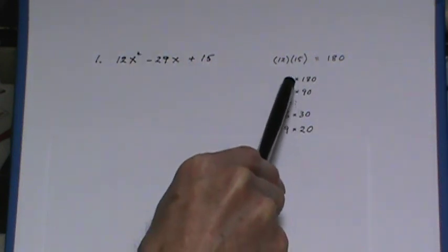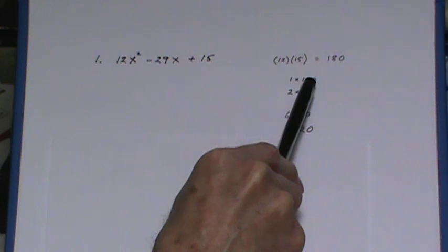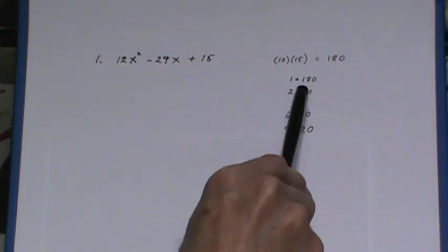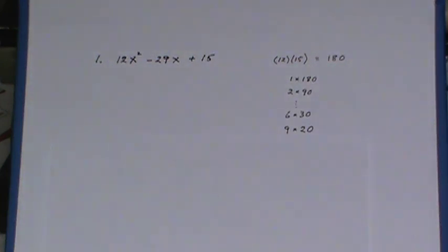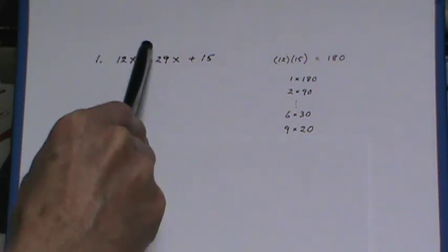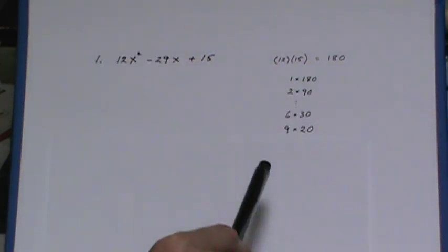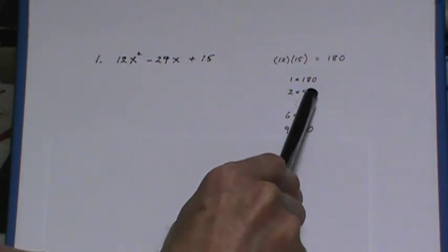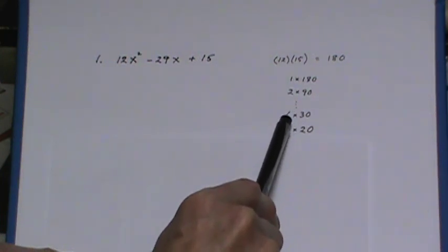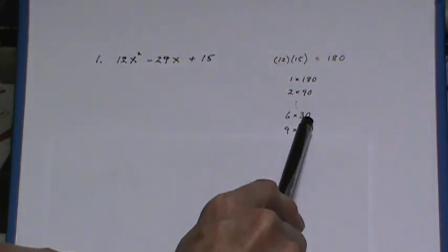Now when you first start factoring this 1 times 180, 2 times 90, you notice these totals 2 plus 90 and so on are fairly large. The closer the two numbers are together the lower this sum is going to be. So when I saw that the sum was quite high here, I skipped a few numbers, went on to 6 times 30 which adds up to 36.